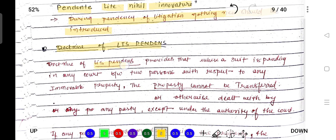What is the doctrine of lis pendens? The doctrine of lis pendens is: where a suit is pending in any court in respect of any immovable property, the property cannot be transferred.